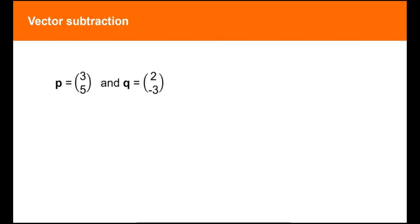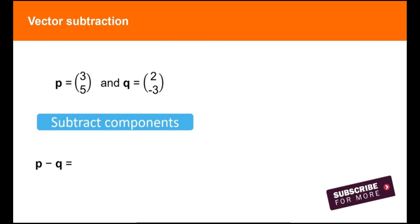You can also subtract vectors with or without the use of a diagram by subtracting components. First subtract the horizontal components and then the vertical components.